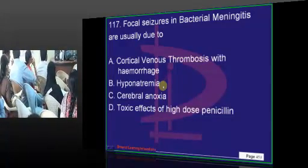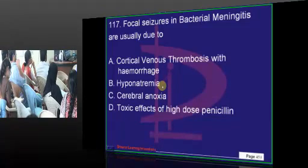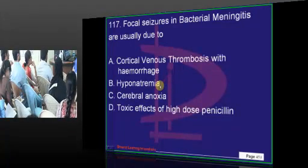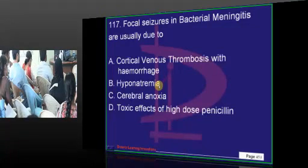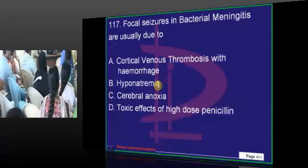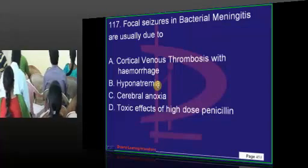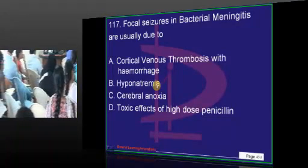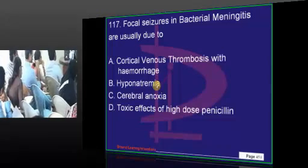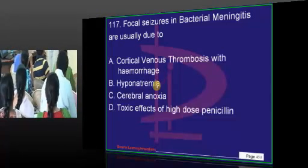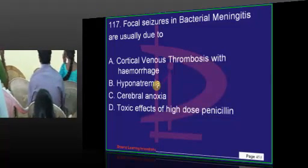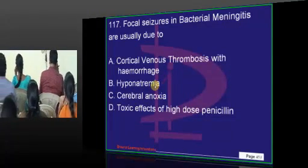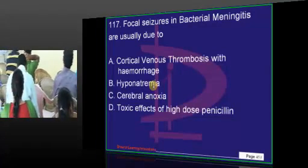Focal seizures — what is your answer, Doctor? In bacterial meningitis? Cerebral anoxia will go only to one place and cause focal seizures. So your point is right. There are two kinds of seizures which can occur in meningitis: focal or generalized. Generalized seizures can be due to the anoxia induced by the ischemia caused by vasoconstriction due to inflammation of the meninges.